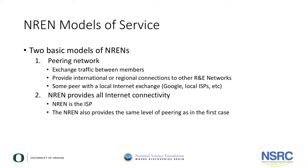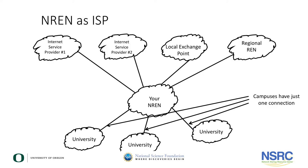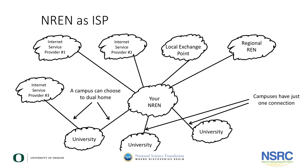When the NREN is a peering network, note that all campuses must have two connections — one to the ISP and one to the NREN. Where the NREN acts as the ISP, the NREN provides full internet access by purchasing internet from an ISP and serving that internet access to the campus, allowing the campus to have a single connection and point their default route to the NREN.